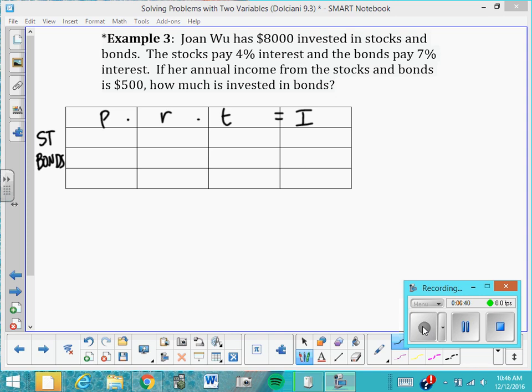He says he has $8,000 invested in stocks and bonds. Stocks pay 4% interest, so I'm going to put that as a decimal under rate. And the bonds pay 7% interest, so as a decimal 0.07. All right, if our annual income, meaning one year, from the stocks and bonds is $500, how much is invested in bonds?